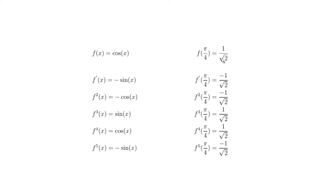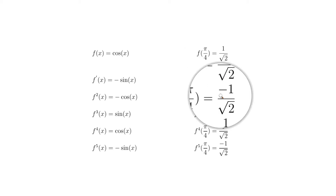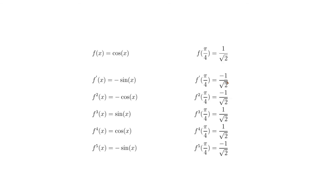A pattern is forming: cosine, −sine, −cosine, sine — and then the sequence repeats. In trigonometric differentiation there are four terms in a cycle that repeat infinitely. So the first derivative is the same as the fifth, the second the same as the sixth, and so on. This lets you quickly determine derivatives for any higher degree.